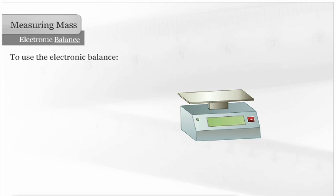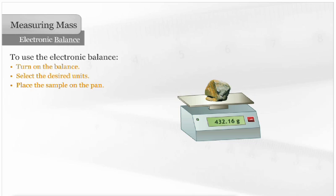To use the electronic balance, turn on the balance, select the desired units, and place the sample on the pan. The mass is displayed on the screen.